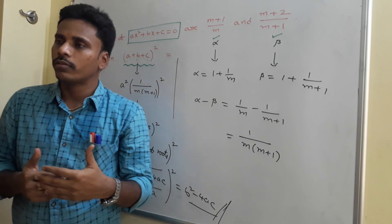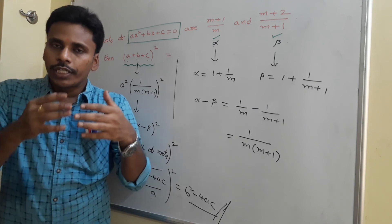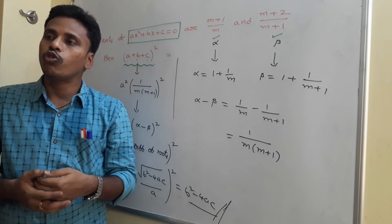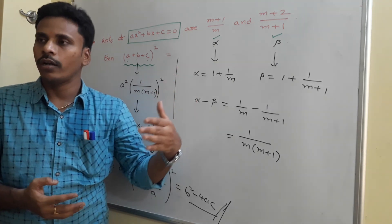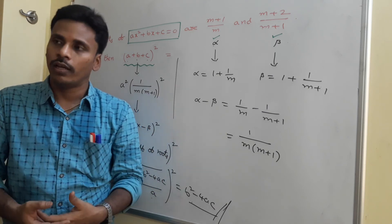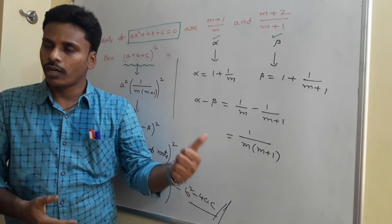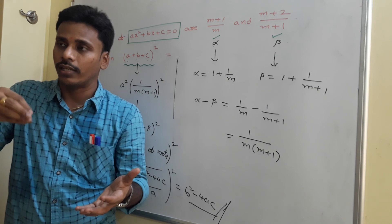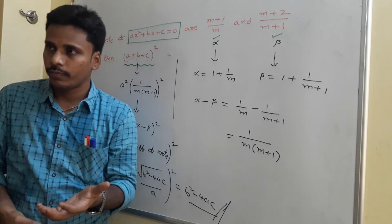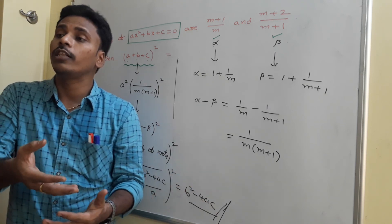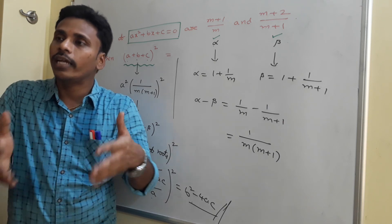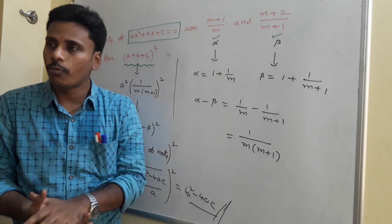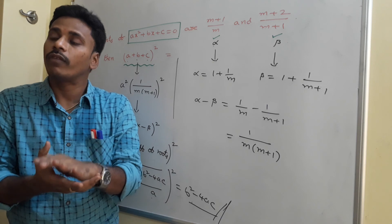In solving problems, not just in quadratics but in any chapter, after finding and revising each problem you should mark it in your own way — as easy, difficult, hard, or logical — perhaps with a star rating. This saves time during revision and examinations, because you can prioritize according to difficulty.